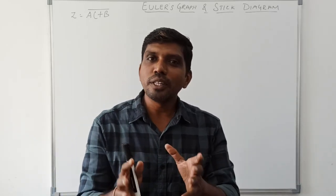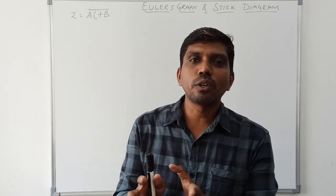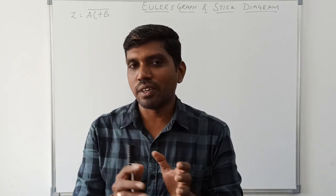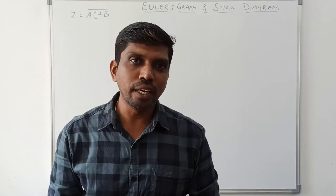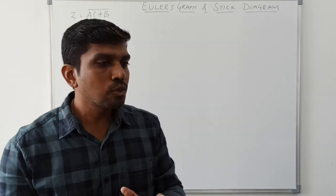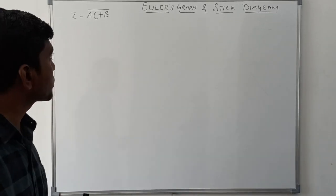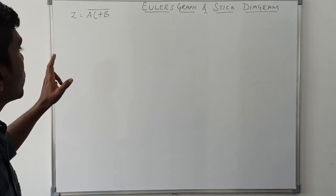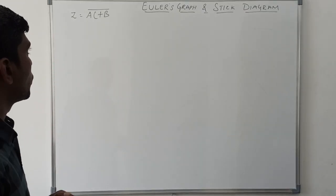Welcome back to our channel. Today's session I am going to teach about how to draw Euler's graph and stick diagram for a corresponding boolean expression. In this session I am taking one boolean expression z equal to ac plus b, the whole complement.